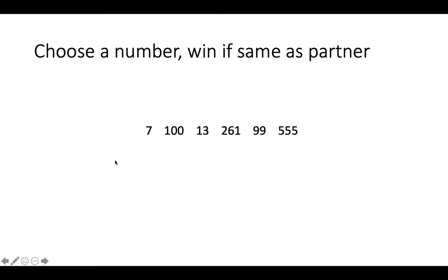Here's another one: choose any number from six options. If you choose the same, you win. In Schelling's survey, a lot of people chose seven and 100. I chose 100 — it's one of the first numbers listed and it's a nice round number everyone likes. But some people say seven because it's the first number. We start to see that there are different focal points, and while it's not always clear which is best, it's better than choosing something like 261.